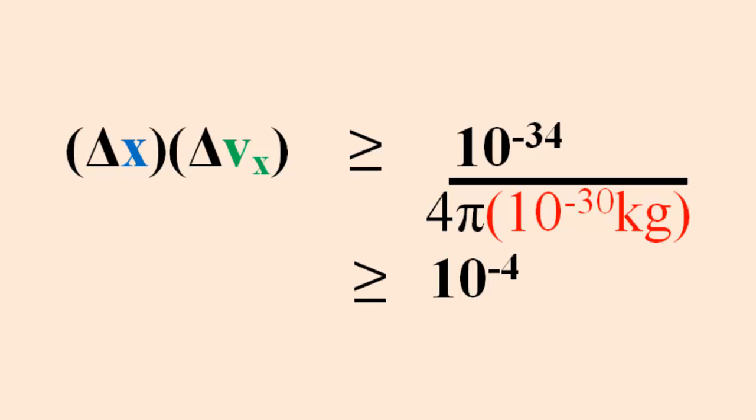In order for this inequality to be true, the product of the error in the velocity and position must be greater than 10 to the minus 4. Another way of thinking about this is one of the errors, the error in the position or in the speed, must be relatively large compared to the other in order for this inequality to be true.